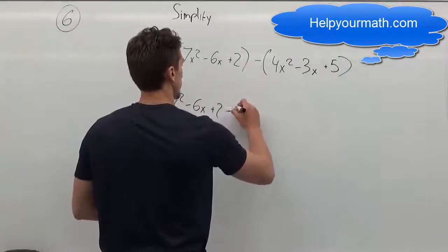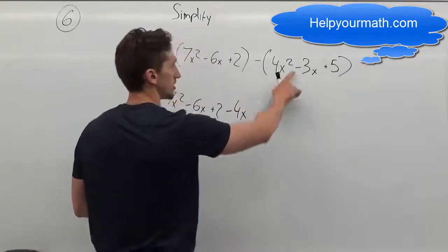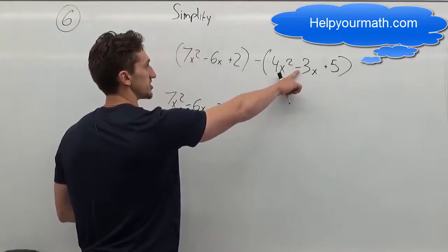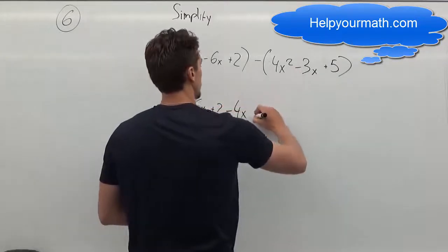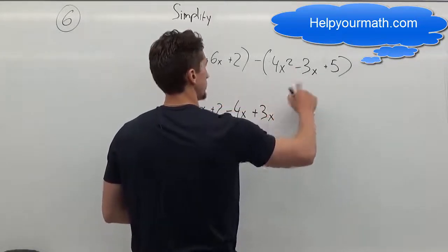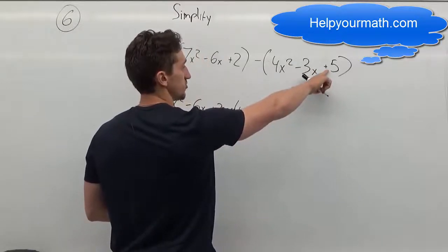Minus 4 will stay, minus 4x. Now, this minus will change the sign, so it's going to be plus now. Plus 3x. Plus 5 is going to change to minus 5.